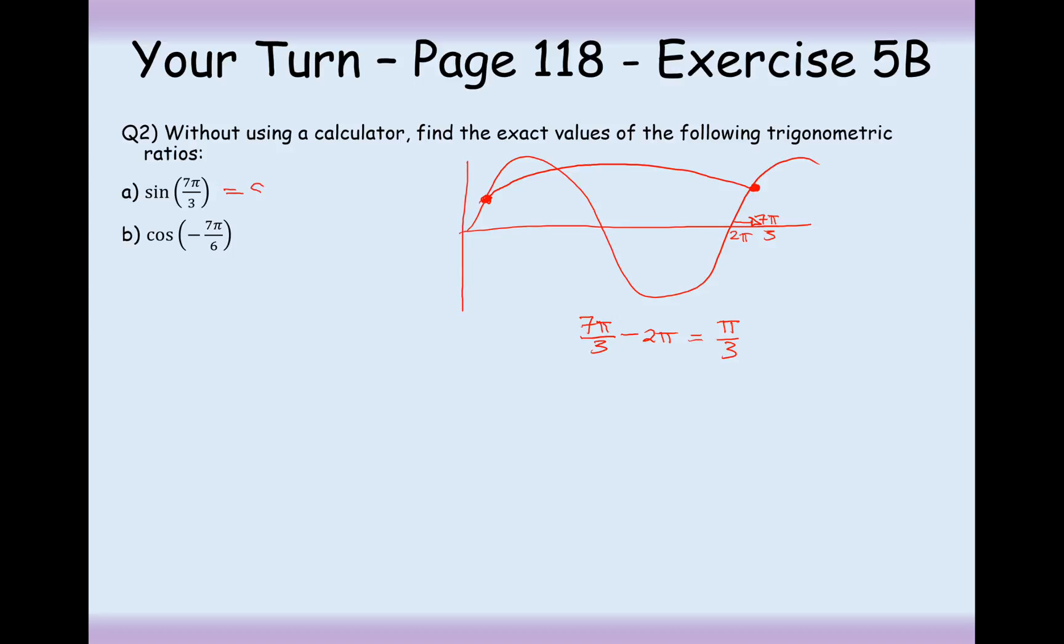In this case here, the value of sin(7π/3) is just the same as sin(π/3), which is 60 degrees, but we're working in a radians chapter. So this is going to be √3/2.